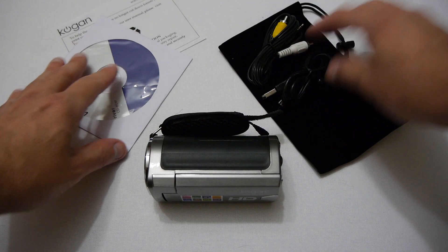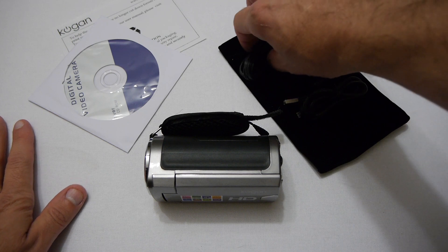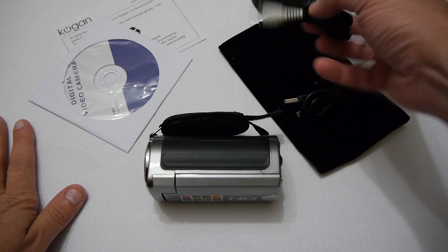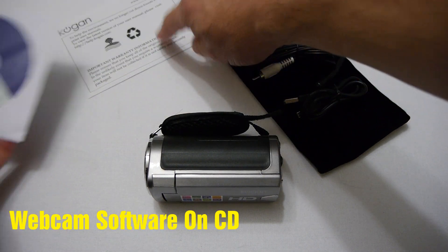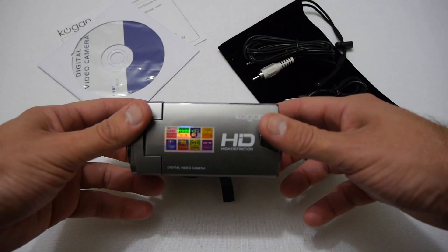Okay so this is everything you've got in the box. You've got a USB cable, you've got the composite video out, a nice little bag to put the camera in, a disc with some drivers on it for the camera and a warranty card and then you've got the camera itself.